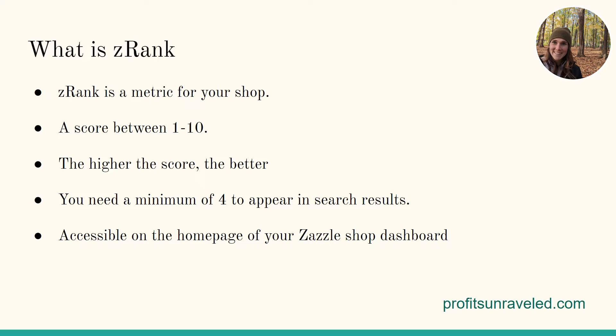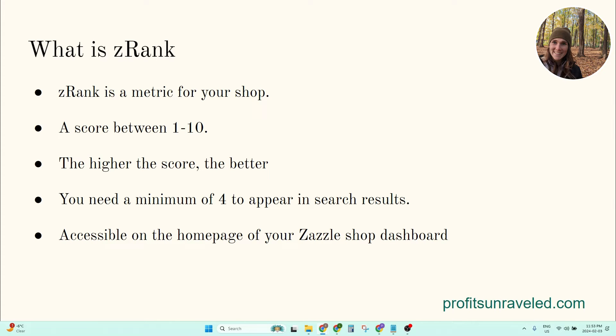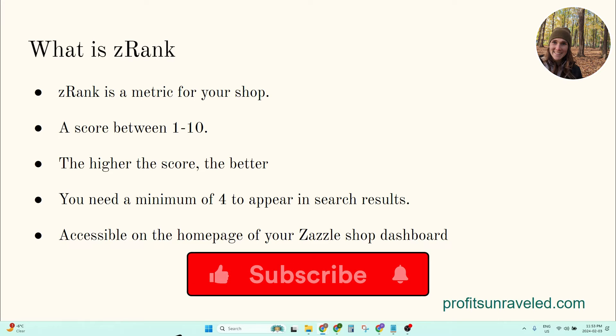So let's dive into it. First, what is Z rank? Z rank is a metric for your shop and it's a score between one and ten. The higher the score, the better your shop is optimized, and you need a score of a minimum of four to get priority in the marketplace search results. To see your Z rank, go into the back end of your shop, hit the home button on the top bar, and it will be on the right-hand side at the top — just little text saying Z rank, and then it tells you right there.